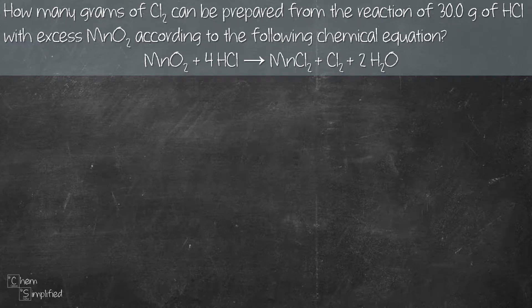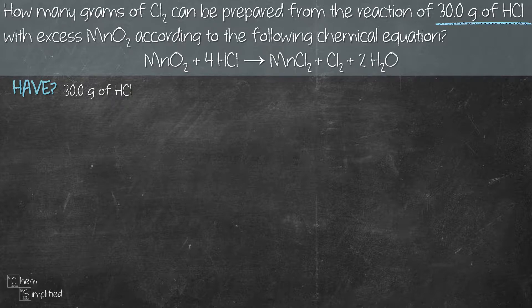We're asked to find the grams of chlorine prepared from 30 grams of HCl and excess MnO2. The balanced equation is also provided. So the first thing we need to do is to find out what we have, which is 30 grams of HCl, and what the question wants us to find. That's going to be the grams of Cl2.